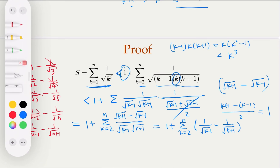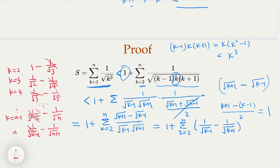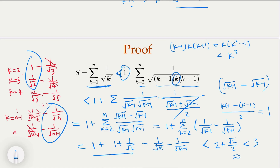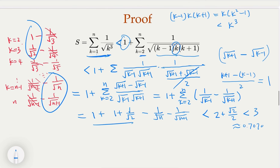What remains after cancellation is the initial 1 plus the surviving terms: 1 plus 1 over square root of 2, minus some quantities that are negative. No matter how small those negative terms are, they are negative, so the result is less than the constant 2 plus 1 over square root of 2, which is approximately 2 plus 0.707, and that's less than 3. So we have the proof. It's a little more involved than the first example, but the essence is the same — expanding or shrinking.